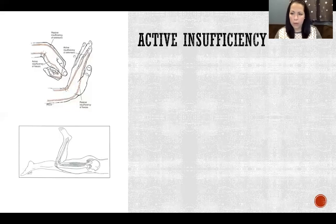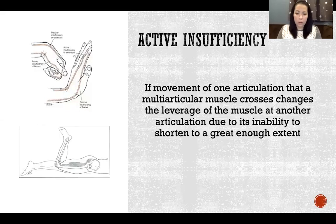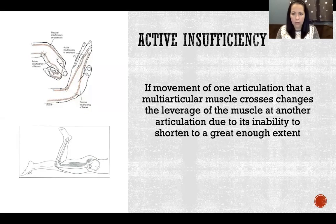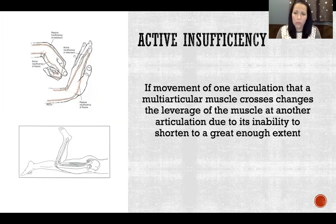Starting with active insufficiency, it occurs if movement of one articulation that a multi-articular muscle crosses changes the leverage of the muscle at another articulation due to its inability to shorten to a great enough extent. Active insufficiency is when we actively cannot cause a movement when we're trying to, because the muscle crosses multiple joints, and what that muscle is doing at one joint affects what it's capable of doing at the other.